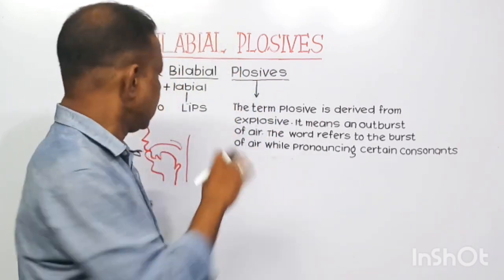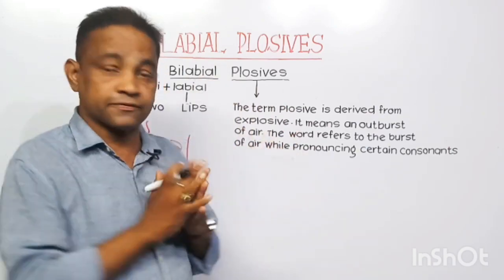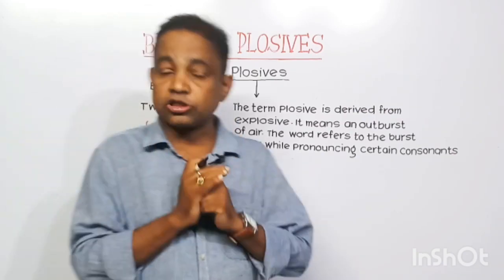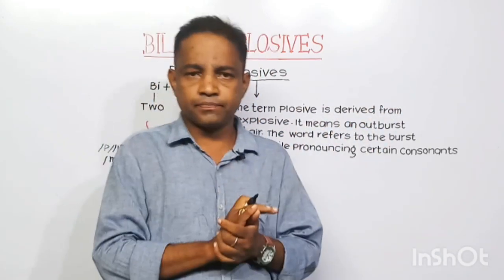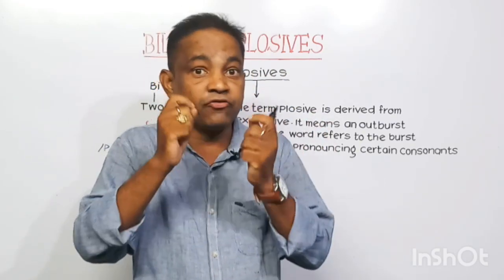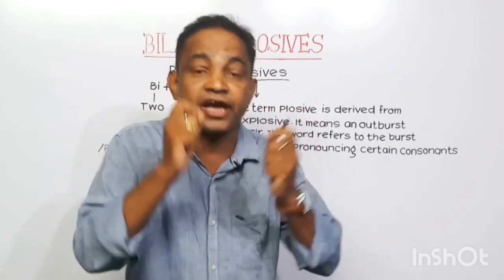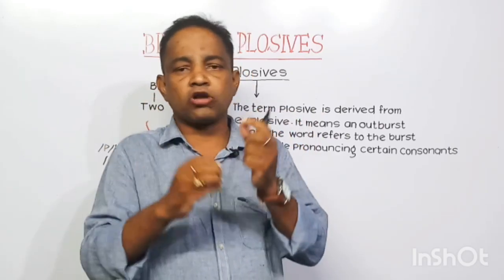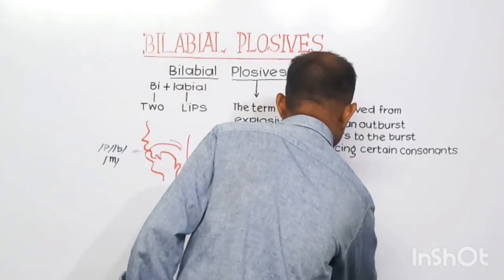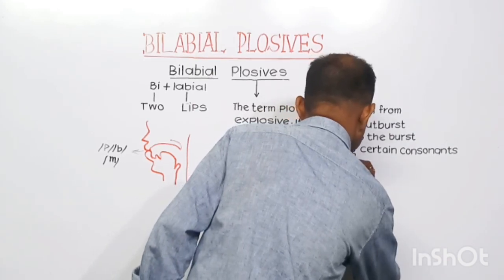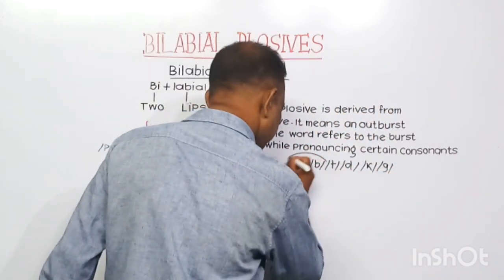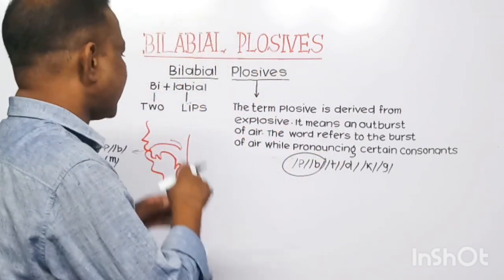The term plosive is derived from 'explosive', meaning an outburst of air. The word refers to the burst of air while pronouncing certain consonants. Try to put your palm on your mouth and say the sound P — you feel a mini explosion of air. This is known as a plosive sound. There are six plosive sounds: P, B, T, D, K, and G. In this video, we are going to discuss P and B, which are called bilabial plosives.